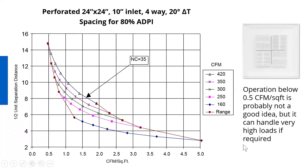At some point, the separation distance falls outside the 80% ADPI boundary. Everything to the left of this boundary line is ADPI less than 80%, and everything to the far right is also less than 80% — so you want to stay in the middle. Starting at one CFM per square foot, coming up to 420 CFM — about NC 35 — the diffuser should be 10 feet from the wall, and the lowest airflow you can run at that spacing is around 0.7 CFM per square foot. But turning this diffuser down doesn't work very well.